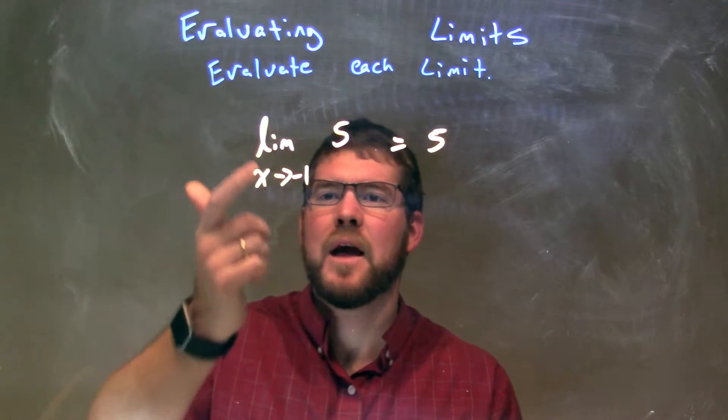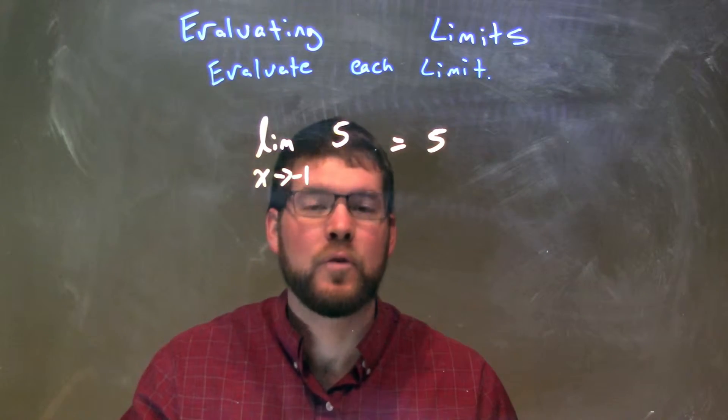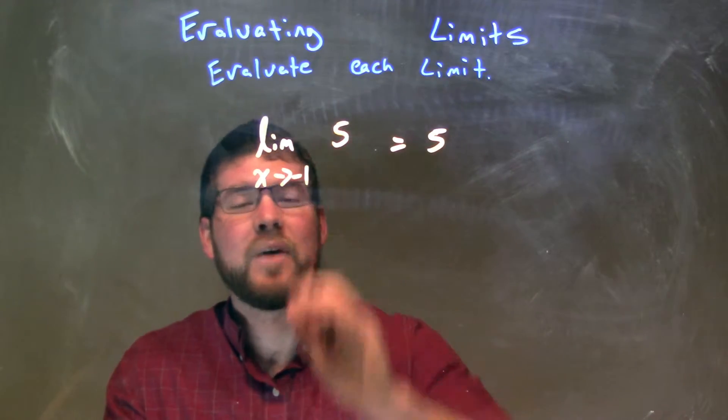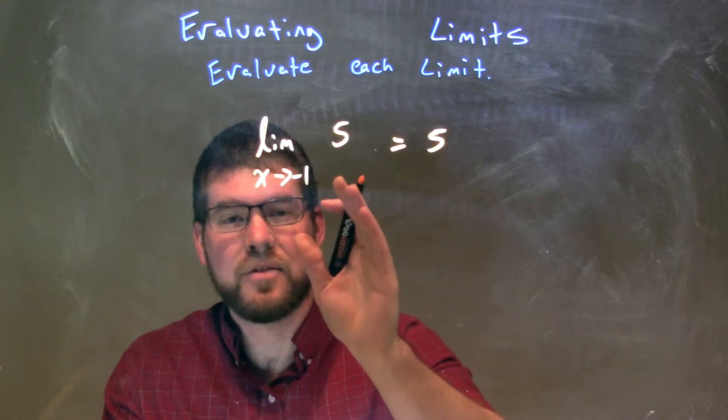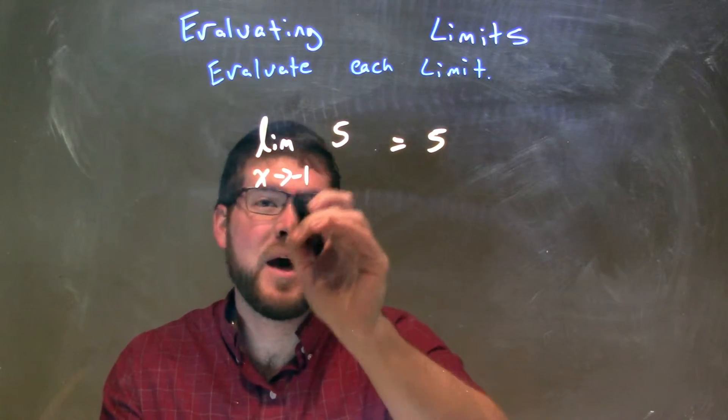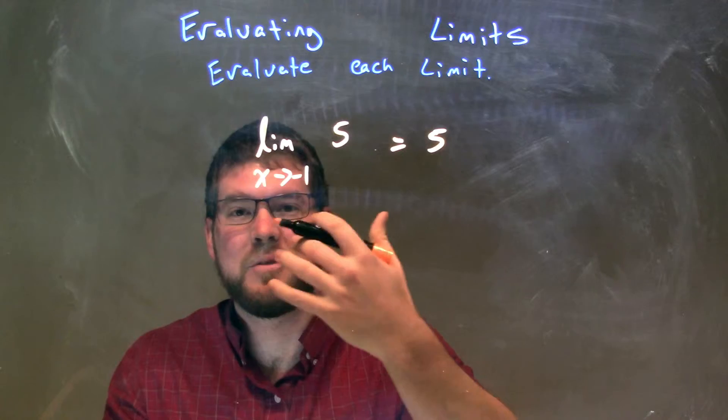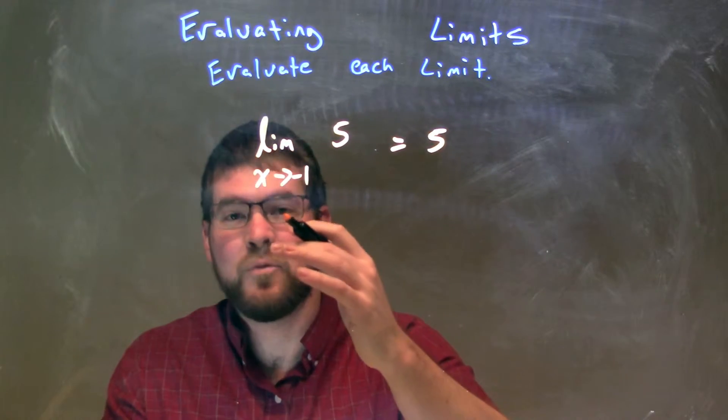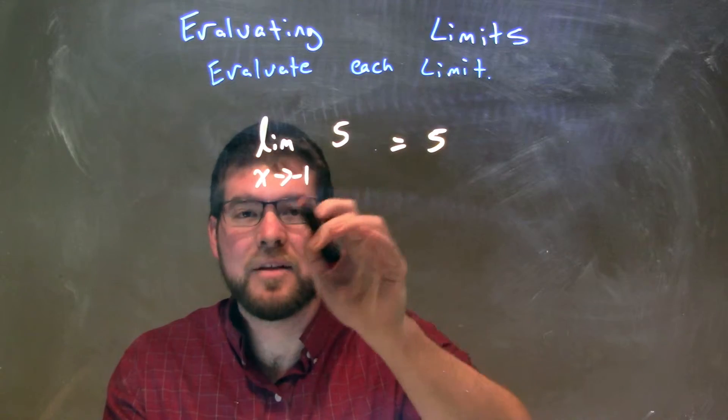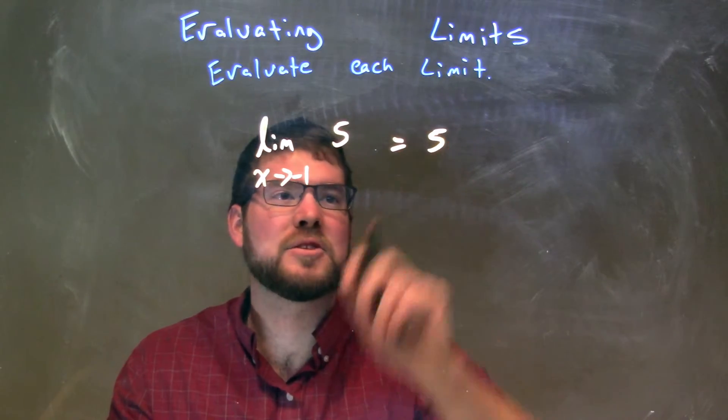So let's recap. We're given the limit as x approaches negative 1 of 5. Well, quickly, 5 is a constant again, right? So since it is a constant, it really doesn't matter what the limit is going to, whether it's going to 1,500, negative 1 million, or even infinity. A limit of a constant there is equal to that constant, which is 5.